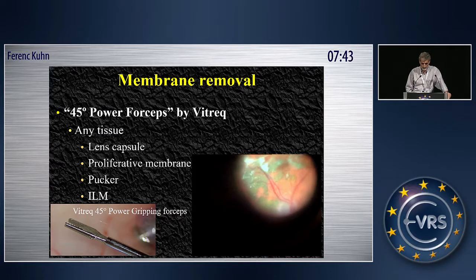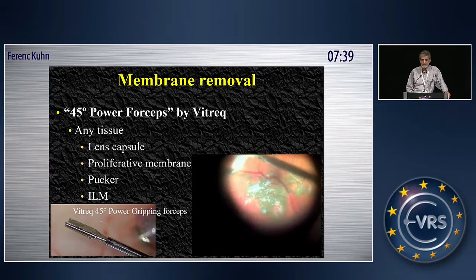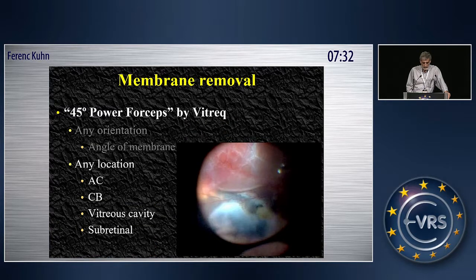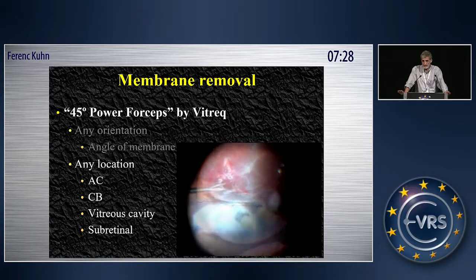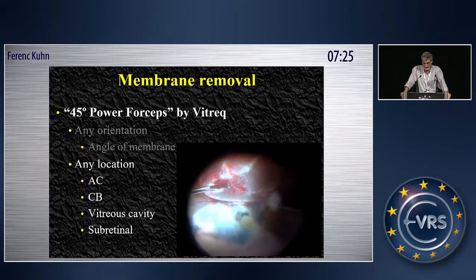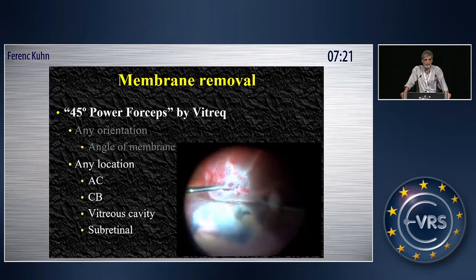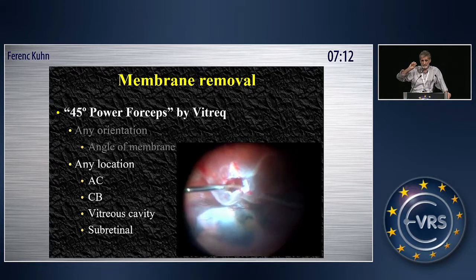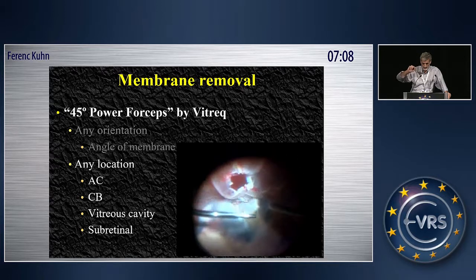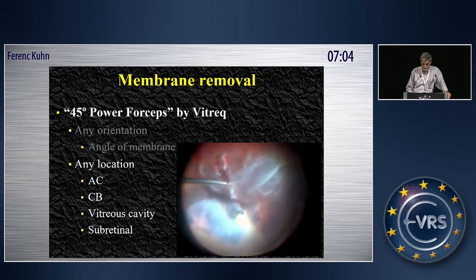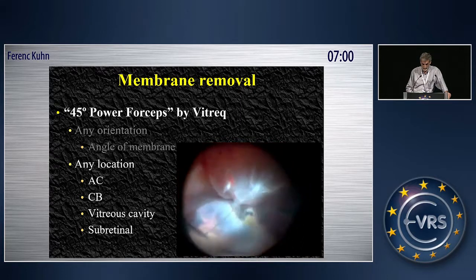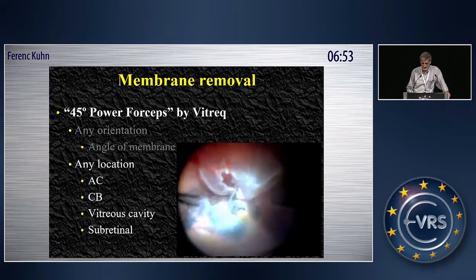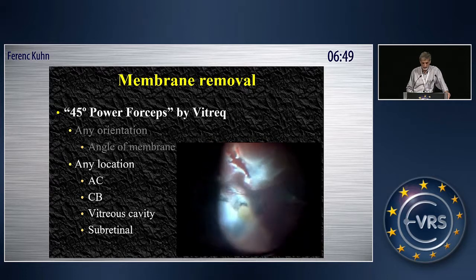Taking the ILM in the posterior pole is very important. Membranes in front of the retina and membranes under the retina also need to be addressed. The reason I came up with these forceps is simply because many of the subretinal membranes have an orientation where traditional forceps will not have enough traction. With these forceps it doesn't matter, so if you deal with cases like this, I suggest considering using them because you will not have an issue about the quality of the tissue, orientation, texture, etc. You will be able to get all of them.